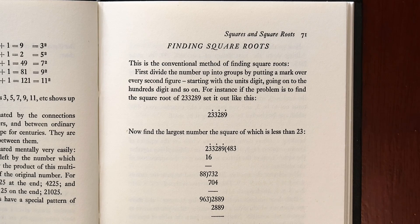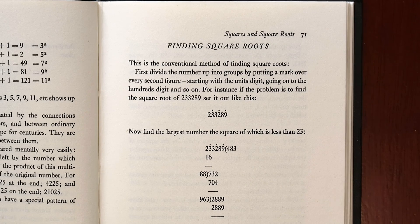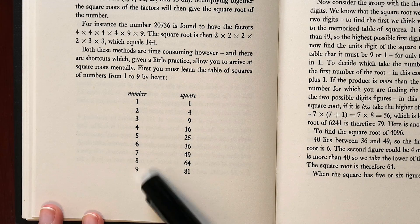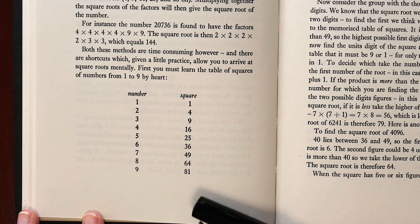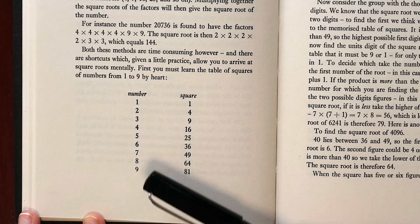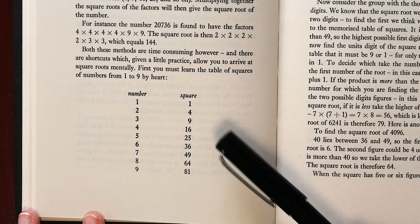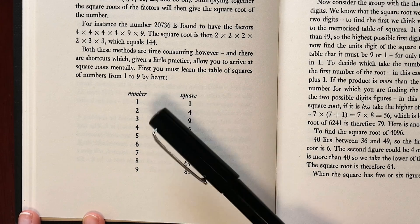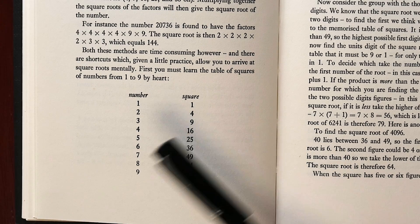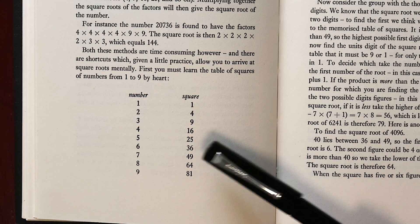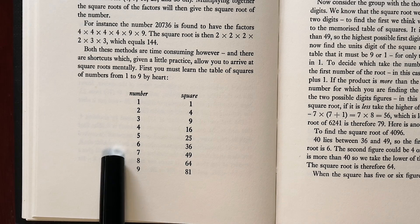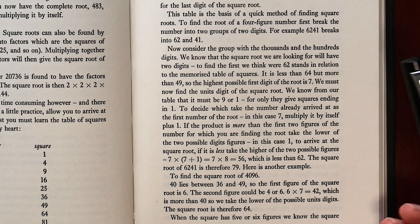Something else that she did a lot of on stage was finding square roots. So let's take a little look at one of her methods there. She says that first you'll want to learn the table of squares of numbers from one to nine off by heart. And from this, you can see that a square ending in a one would have a root ending in either a one or a nine. And a square ending in a four would have a root ending in either a two or eight. Squares ending in a nine or a six will also have two possible root endings. And a square ending in five will only have one possibility, which is that the root also ends in five.